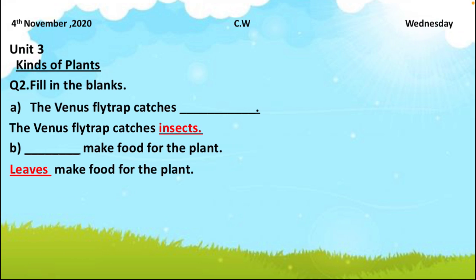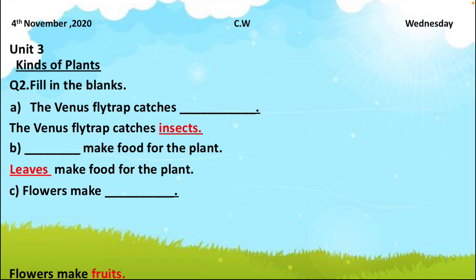Statement C: flowers make blank. Where does fruit come from? It comes from the flower. So the answer is: flowers make fruits.